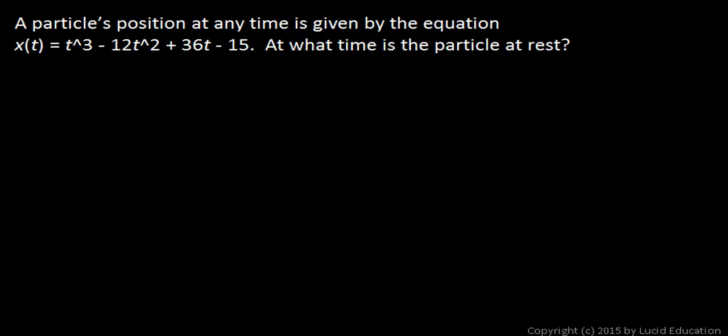The key to solving this is to understand that velocity is the derivative of position. We're given the function for position, so we take the derivative of that — that's the velocity — and the particle will be at rest when the velocity is 0.